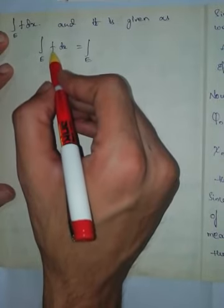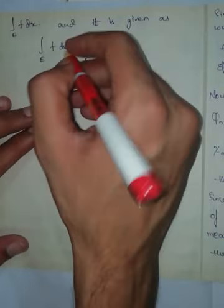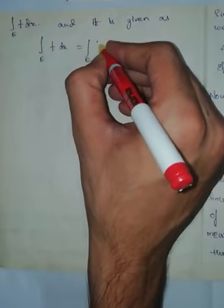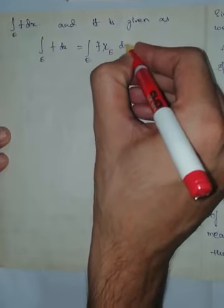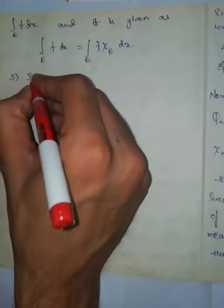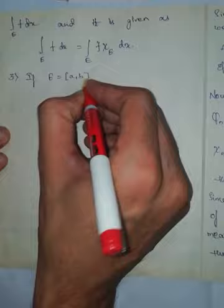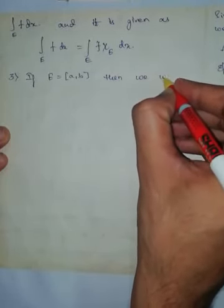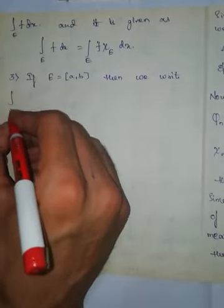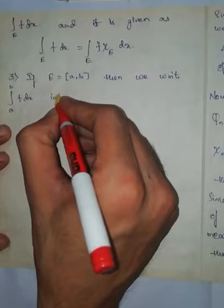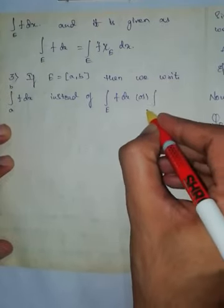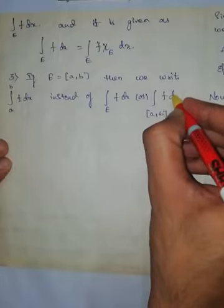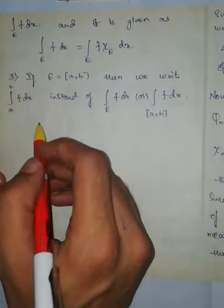The integral over E of f dx is given as the integral over E, and since f is a bounded measurable function which vanishes outside a set of finite measure, this can be written from the definition of the Lebesgue integral of a simple function as the integral of f times chi_E dx. Next note: if we take E as the closed interval [a, b], then we write the integral from a to b of f dx instead of the integral over E of f dx, or equivalently the integral over the closed interval [a, b] of f dx.